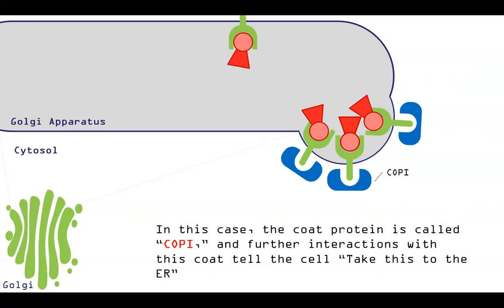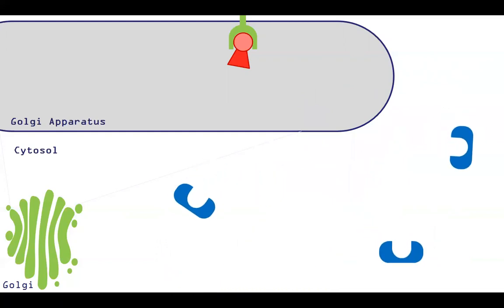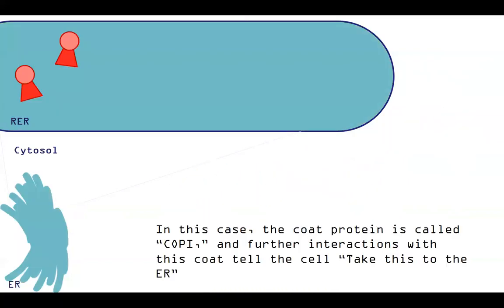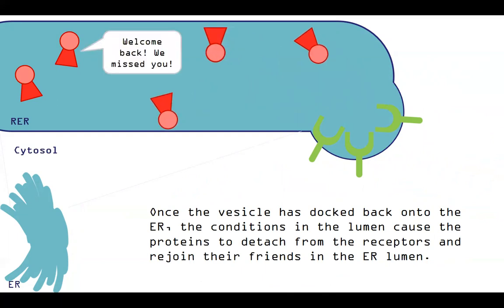So now we're still in the Golgi apparatus. This vesicle is going to go ahead. We don't need those coat proteins anymore. And it's going to go ahead and go back to the ER. So here's the rough ER. Now on the receiving end, that vesicle membrane merges with the compartment in the rough ER. And now these KDEL proteins can go back into the cell and be welcomed with their friends. Again, they were supposed to stay here the whole time. These receptors can then go back to the Golgi apparatus in another vesicle and get ready to capture more of these KDEL sequences.